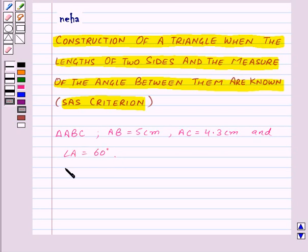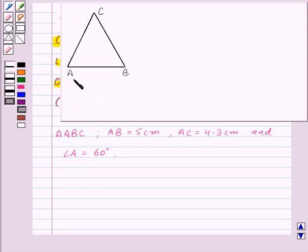First of all, let us draw the rough sketch of triangle ABC and mark all the measurements given here. So here is the rough sketch of triangle ABC. We are given AB is equal to 5 cm, AC is equal to 4.3 cm, and angle A is equal to 60 degrees.